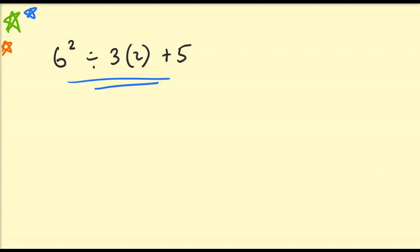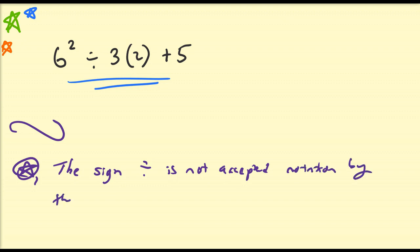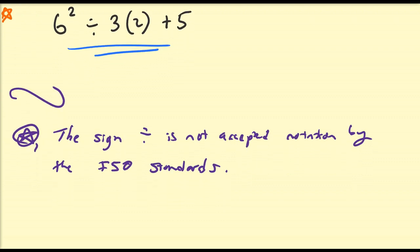Alright, so before I get into the discussion of this problem, I need to make two points clear. The first point I want to discuss is that the sign, this thing, is not really accepted notation by the ISO standards. Usually, in the mathematical literature, we like to use symbols that are accepted in the mathematical community, which gives some uniformity so not everybody is using different notations. This is not so important for this particular problem, but it leads to a very important point in terms of the interpretation.